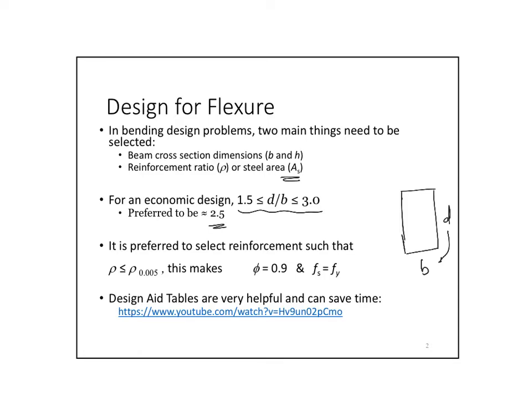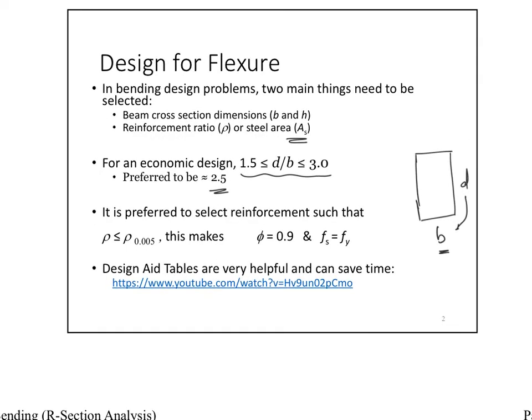Give a nice assumption for the B. A nice starting assumption for the B is between 250 to 350 millimeters. And then, of course, for us to have a ductile behavior, a good start for the rho is to be less than rho 0.005. What this ensures for us is that my phi equals 0.9, and my Fs has a value of F yield, which means my rebar has yielded.